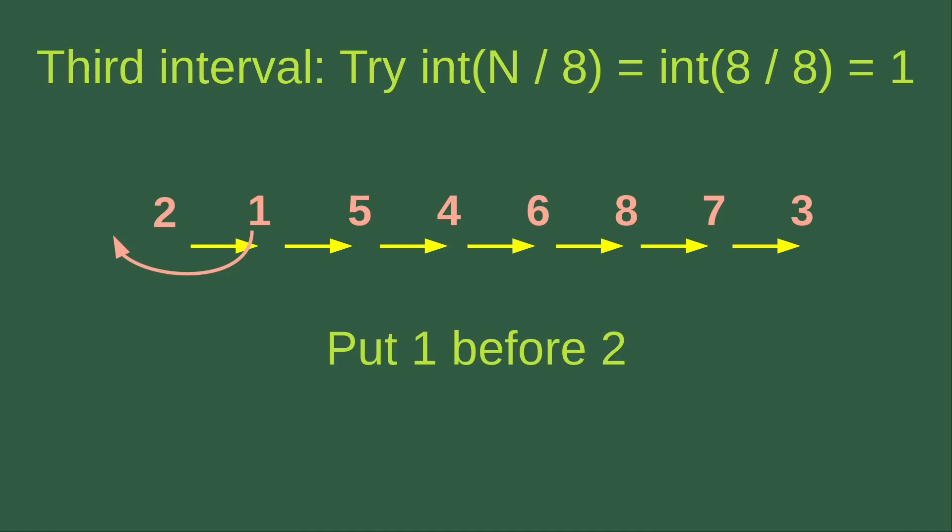8 divided by 8 is simply equal to 1, and the integer part of 1 is also 1. So we just do the insertion sort with one element as the interval, which means we just do the ordinary insertion sort.